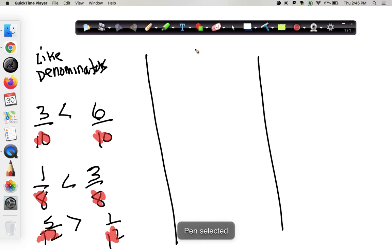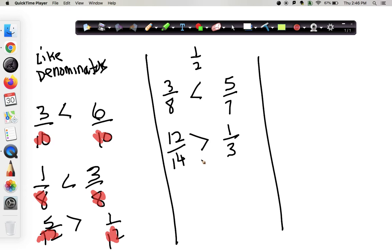The next thing we did was really use one half and compare all fractions to either less than half, equal to half, or greater than half. Everything smaller than half is smaller than everything greater than half. So 3 eighths, 3 is less than halfway to 8. 5 sevenths, 5 is over halfway to 7, so this is greater. 3 eighths is less than 5 sevenths. 12 fourteenths is more than half, and 1 third is less than half, so 12 fourteenths is greater than 1 third.